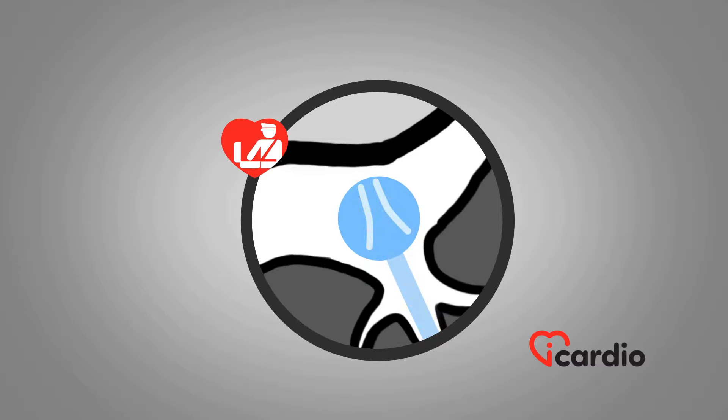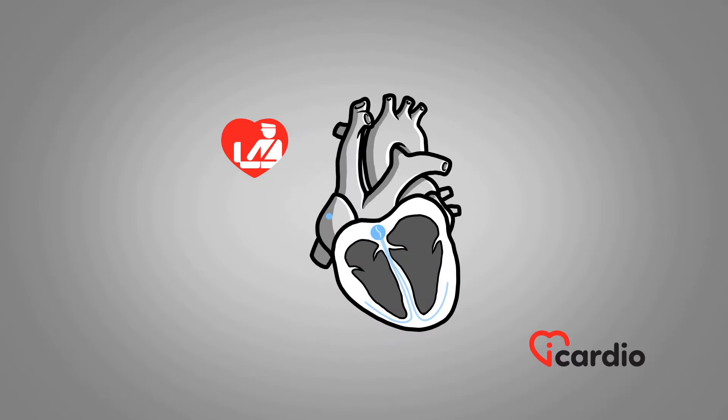If the input only passes through one of the two entrances, the flow of electricity takes this path toward the ventricle and goes back up through the other one. An electrical loop, or short circuit, begins and triggers supraventricular tachycardia.